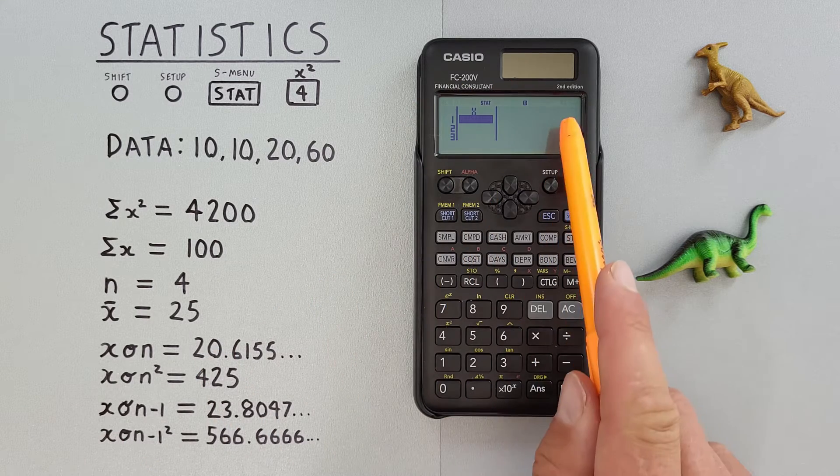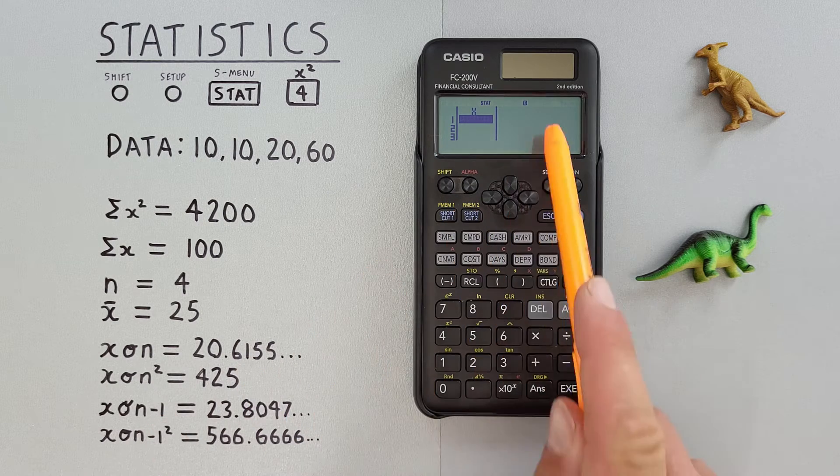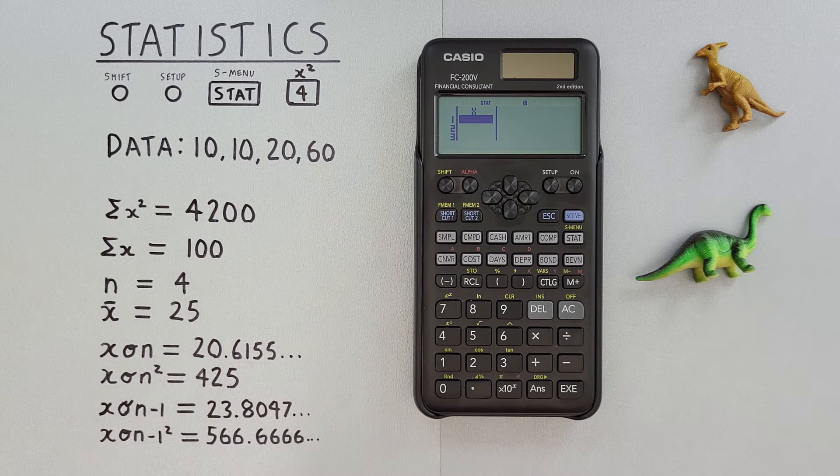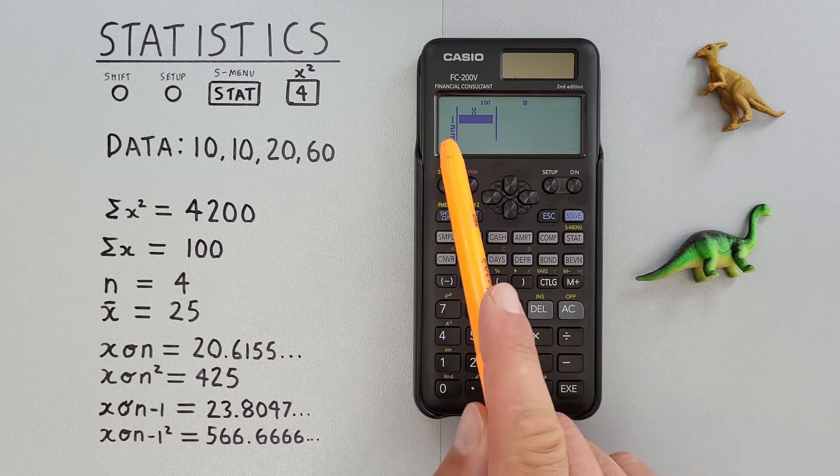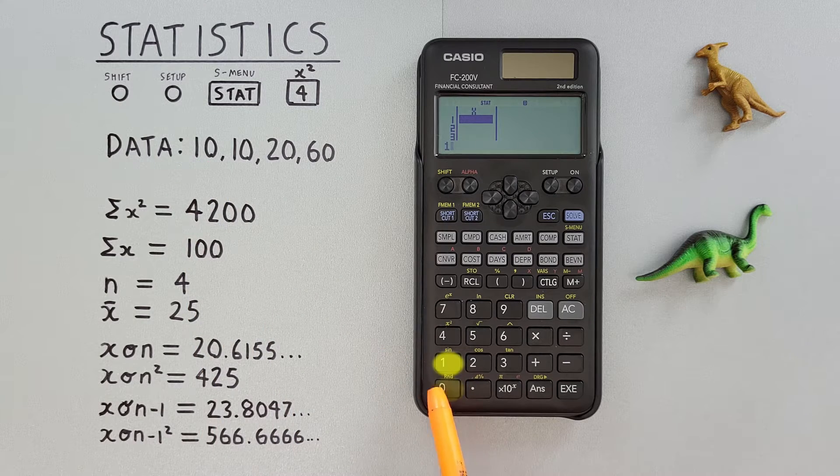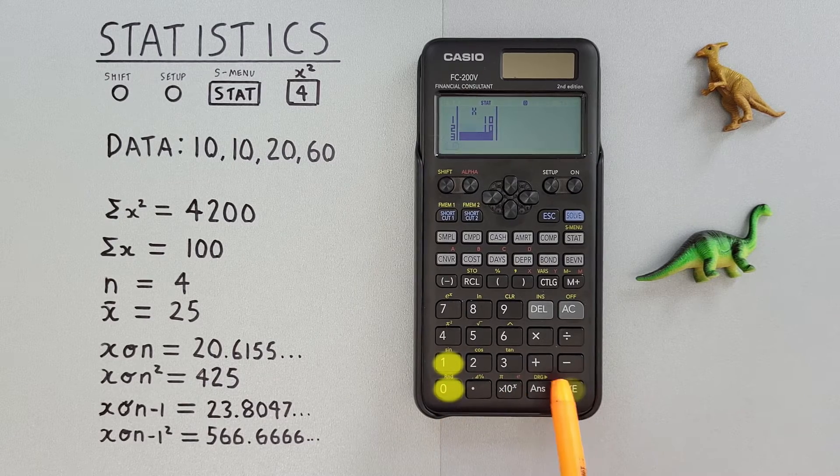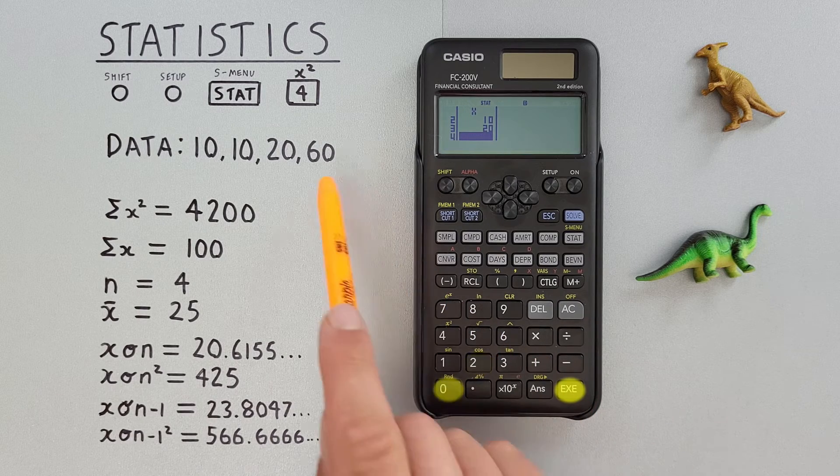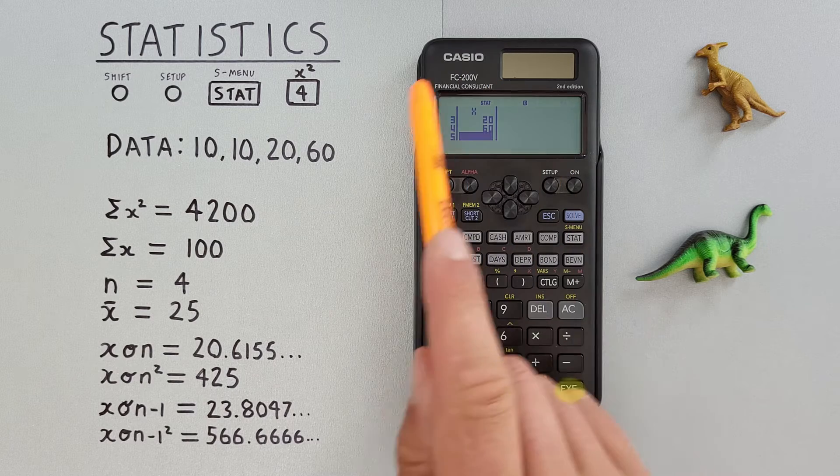That brings us to this table where we can enter our dataset. If we have multiple of the same number, like multiple 10s in our dataset, we can use a frequency list to make that easier. But for this example, we'll just enter it the normal way. So we'll go ahead and enter 10, enter, 10, enter, 20, enter, and 60, enter. There we go, we've got our dataset entered.